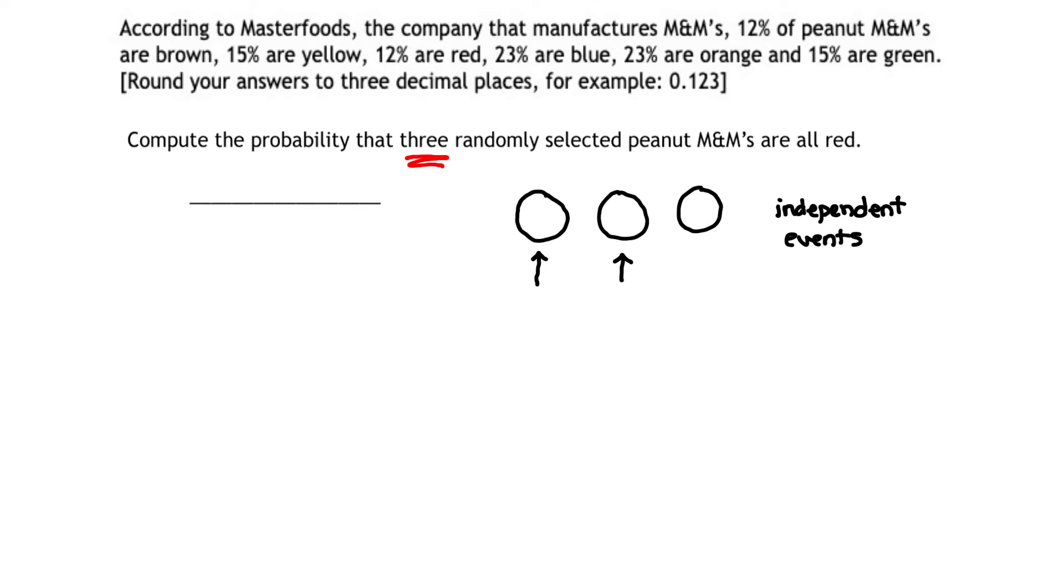Now for our specific problem, what kind of sequence of events do we want to occur? We want to randomly select three M&Ms, and we want them all to be red.